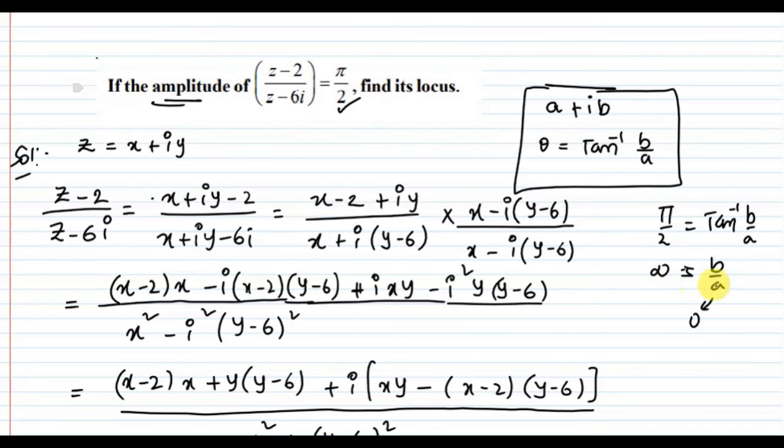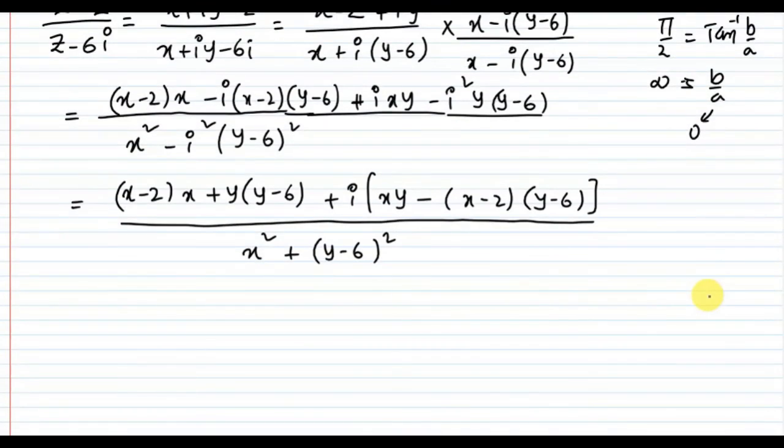Infinity equals b/a, which means a must be zero. For the answer to be infinity, the denominator must be zero. So the real part is zero. Since amplitude is infinity, it implies the real part is zero.